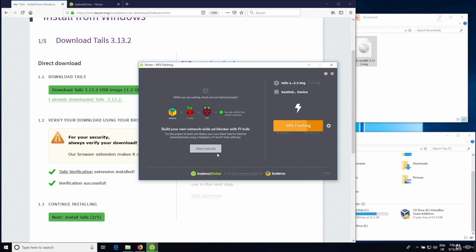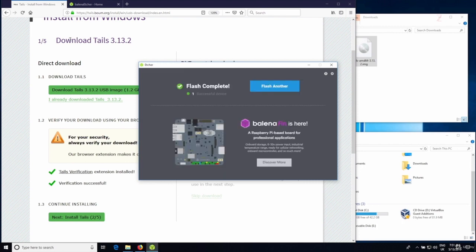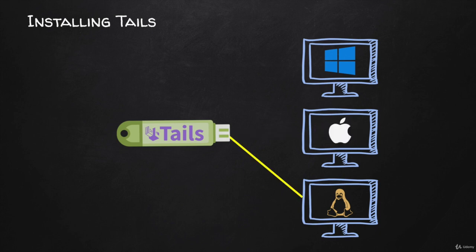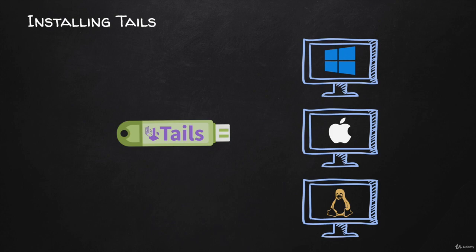All these steps are identical on all operating systems — Windows, Linux, and OSX. Follow them exactly as shown, and ignore the fact that it says 'Windows' on the page. The flash is complete — one successful device — so everything is done with no errors. Tails is now installed on my USB device connected to my Windows machine. I can unplug it and connect it to any computer regardless of operating system, use Tails without leaving any traces, and I'll show you how to do that in the next lecture.